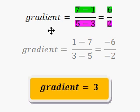But here's a summary. The gradient is the differences between the y bits, which I've coloured in green, divided by the differences in the x bits, which gives you 6 divided by 2, which is 3.